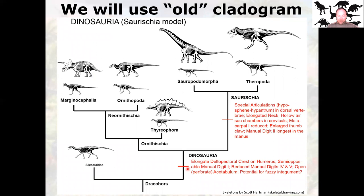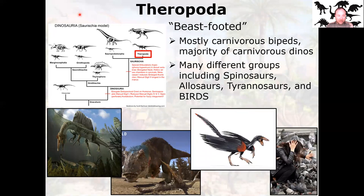We're going to talk about the Dinosauria as a whole, then Saurischians first — theropods and sauropods — that's the next module. Then the next module after that is the Ornithischians: armored dinosaurs, marginocephalia, and bird-foot dinosaurs. So: theropods mean beast-footed. They're mostly carnivorous bipeds, the majority of carnivorous dinosaurs. If you think about a meat-eating dinosaur, it's almost certainly a theropod. There are very few exceptions. There are a lot of different groups of theropods — including spinosaurus, tyrannosaurus, archaeopteryx, and of course the fearsome pigeon.